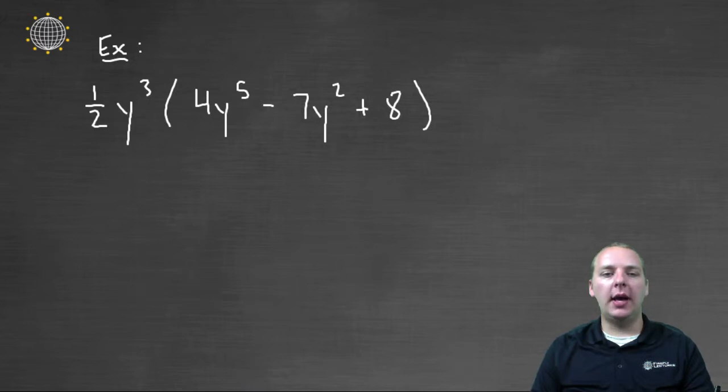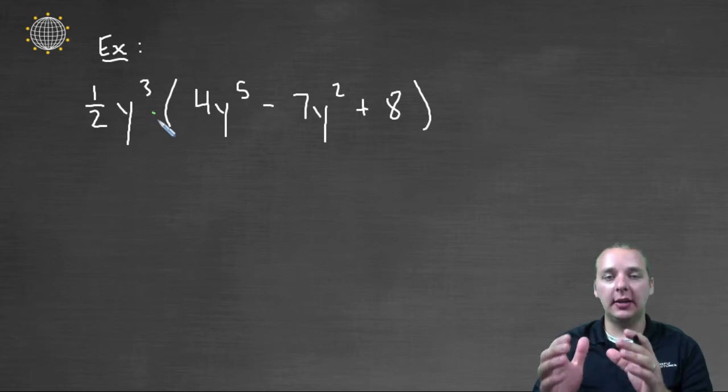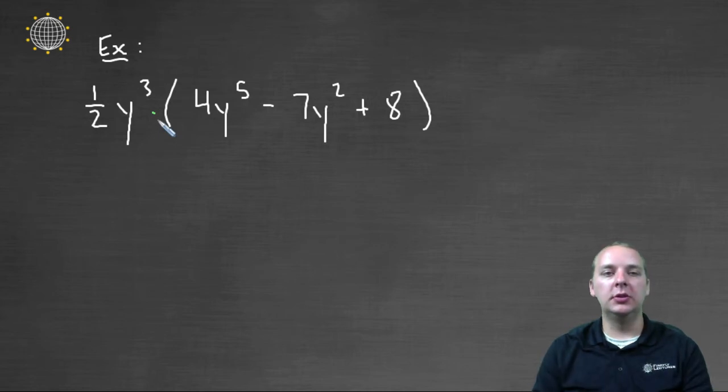Let's say we had one-half y³ as our monomial times 4y⁵ minus 7y² plus 8. So we would be able to recognize this immediately without somebody telling us, because we can see what we're multiplying. The first term is a monomial, and the second item is a polynomial. So we'll know that we're supposed to use the distributive property, even if no one told us.